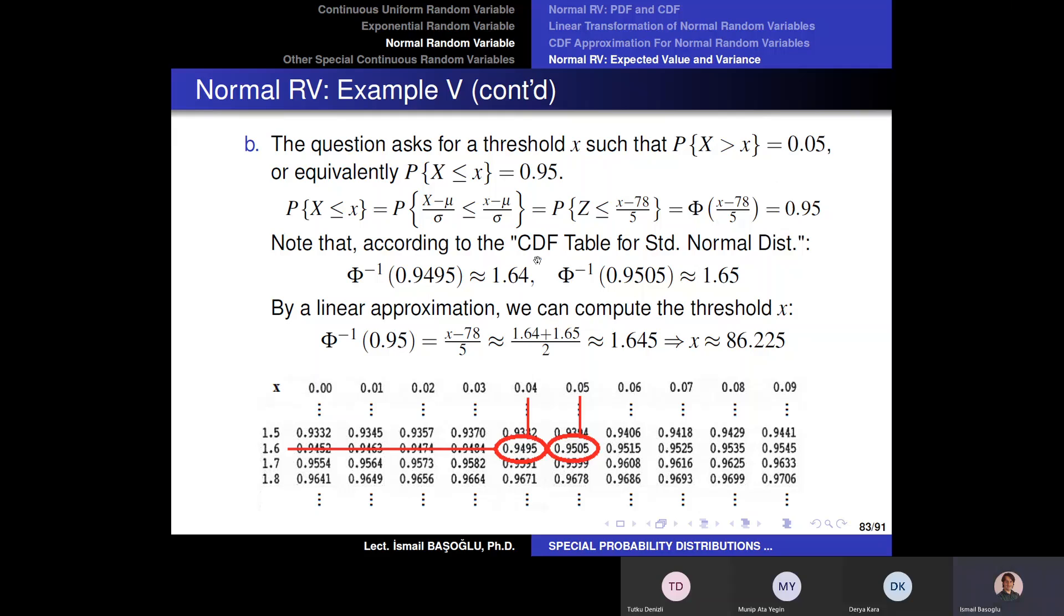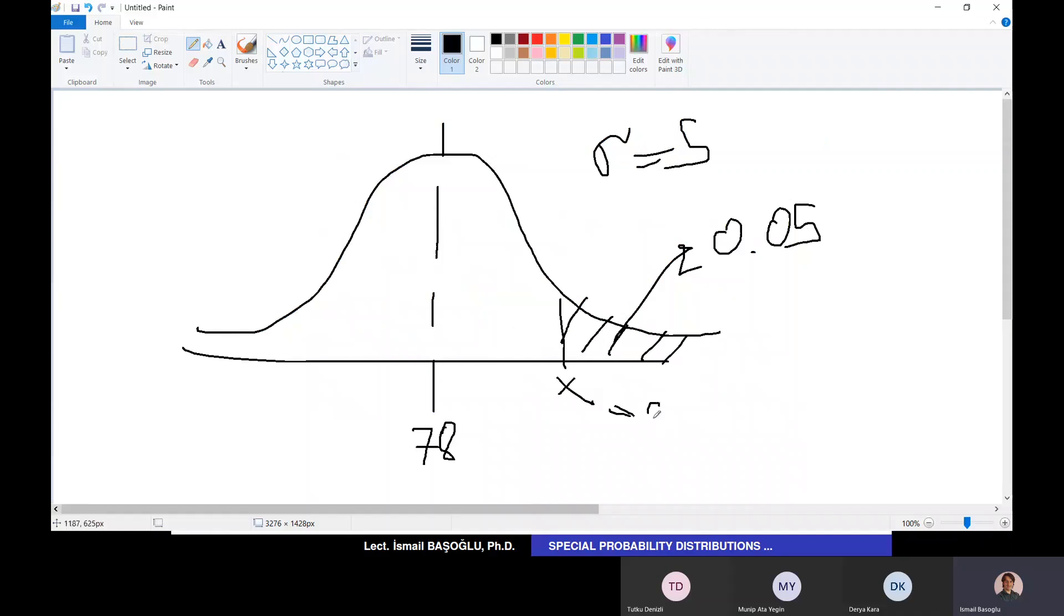And for 0.95, we need to identify the critical x value, which is somewhere between 1.64 and 1.65. And approximately we can say that it is just in the middle because 0.95 is just in the middle here. We can say that it is equal to 1.645, and 1.645 must be equal to (x minus 78) over 5. And the x value here is 86.225. Only 5% of the male students have a larger weight than this.